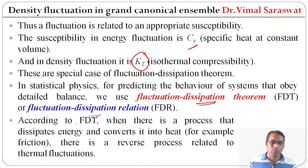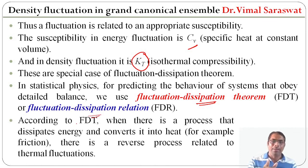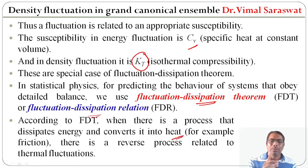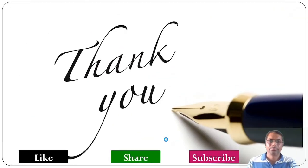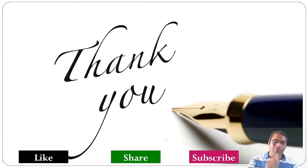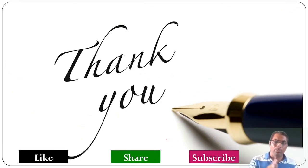According to the fluctuation-dissipation theorem, when there is a process that dissipates energy and converts it into heat, there is a reverse process related to thermal fluctuation. This concludes our session on density fluctuation in the grand canonical ensemble.